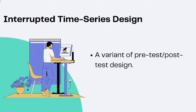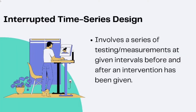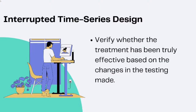The interrupted time series design is a variant of the pre-test and post-test design. It involves a series of testing at given intervals before and after an intervention has been given. This design conducts multiple tests before and after the intervention, which allows the researcher to observe the consistency of the test. It also verifies if the treatment has been truly effective based on the changes in the testing made.